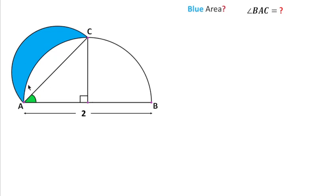Welcome to Definite Mind. In this question there are two semi-circles as we can see, and the diameter of this larger semi-circle is AB, which is equal to 2 units.